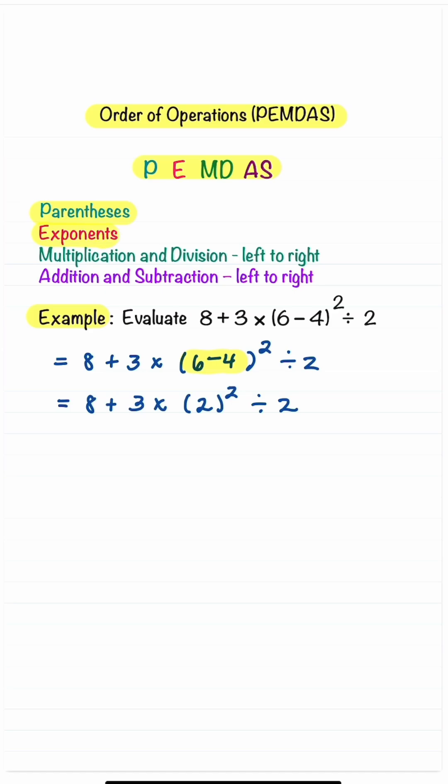Next, we are going to evaluate the exponent. That's right here. Now we have 8 + 3 × 2², which is 4, divided by 2.